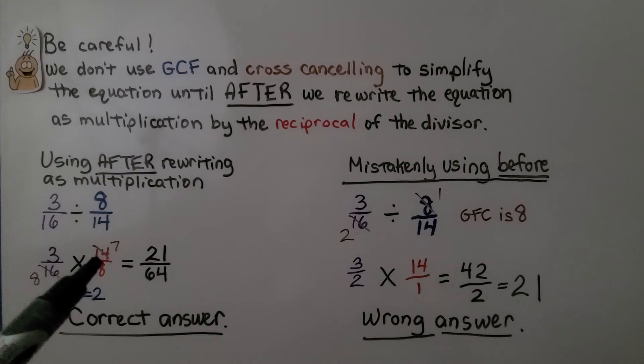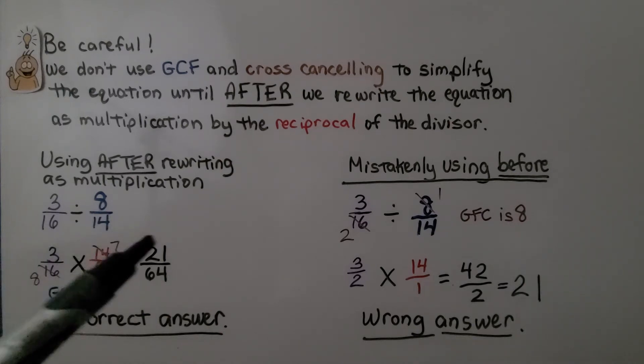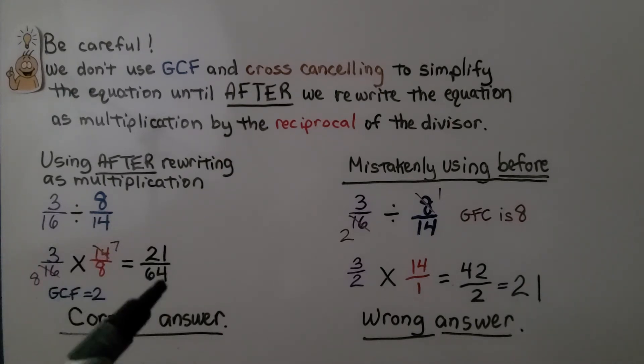So 7 times 2 is 14, so that cancels out as a 7. 8 times 2 is 16, so this cancels out as an 8. And we have 3 times 7 is 21 and 8 times 8 is 64. We have 21 64ths as our correct answer.